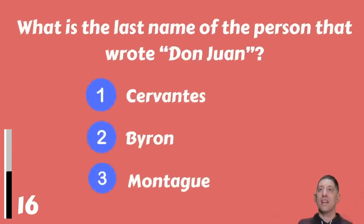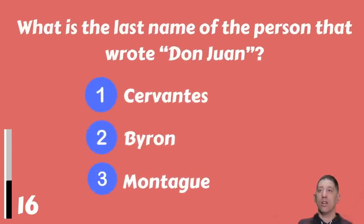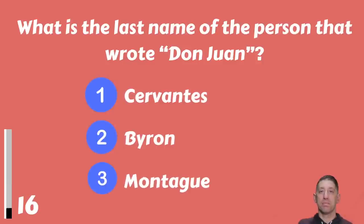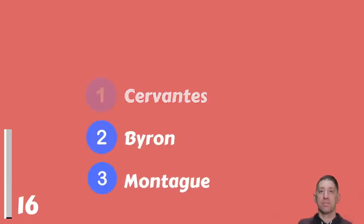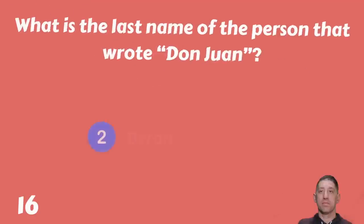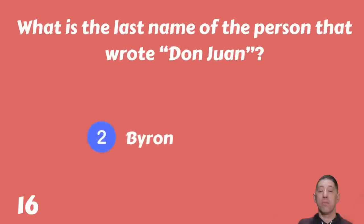What is the last name of the person who wrote Don Juan — Cervantes, Byron, or Montague? The answer is Byron.